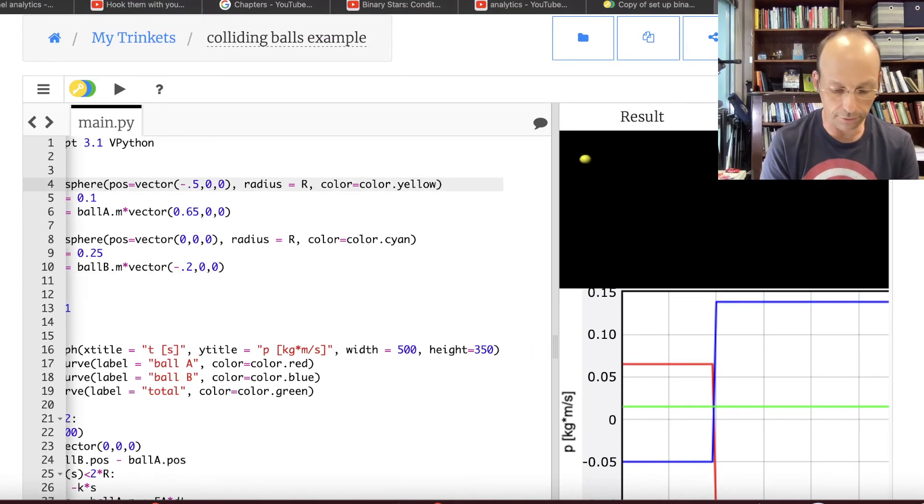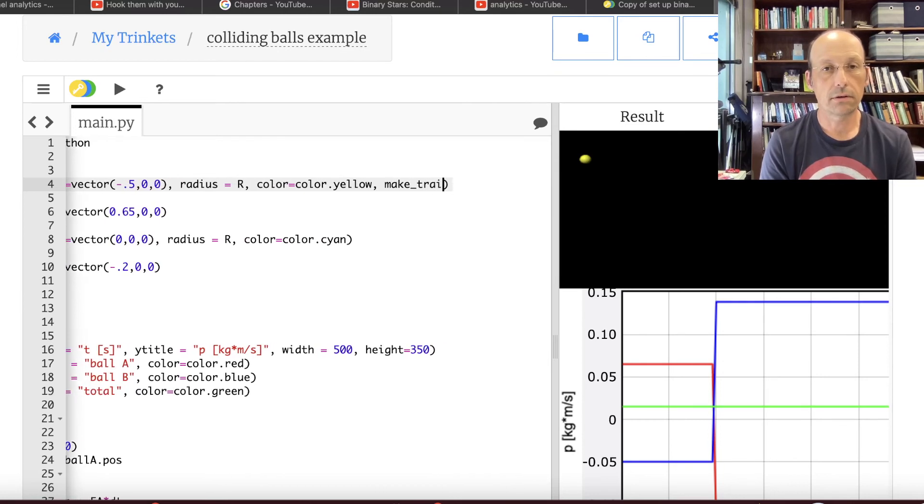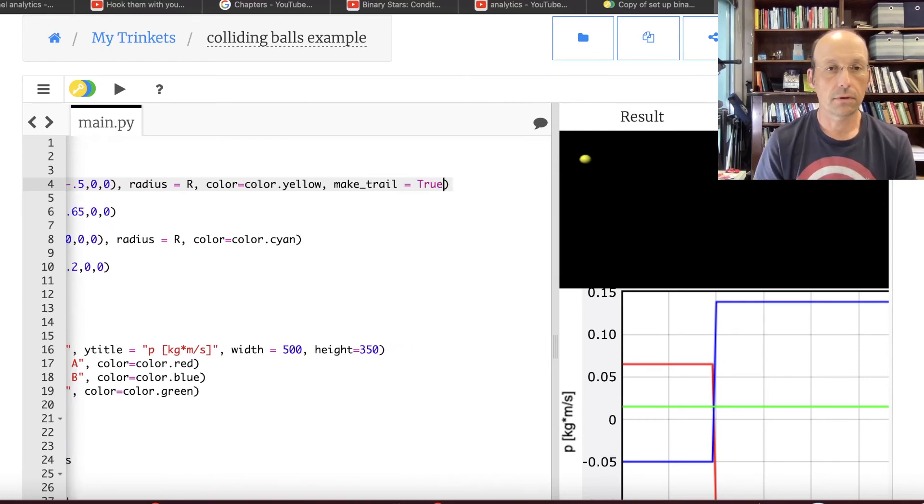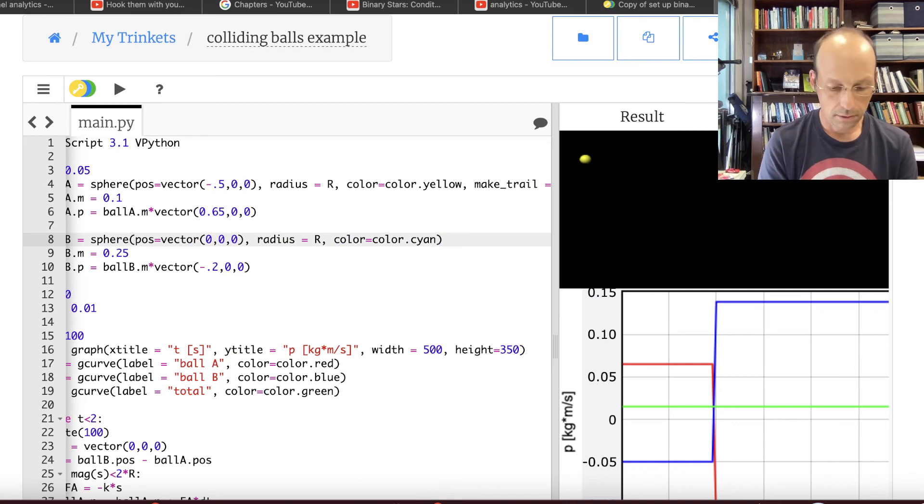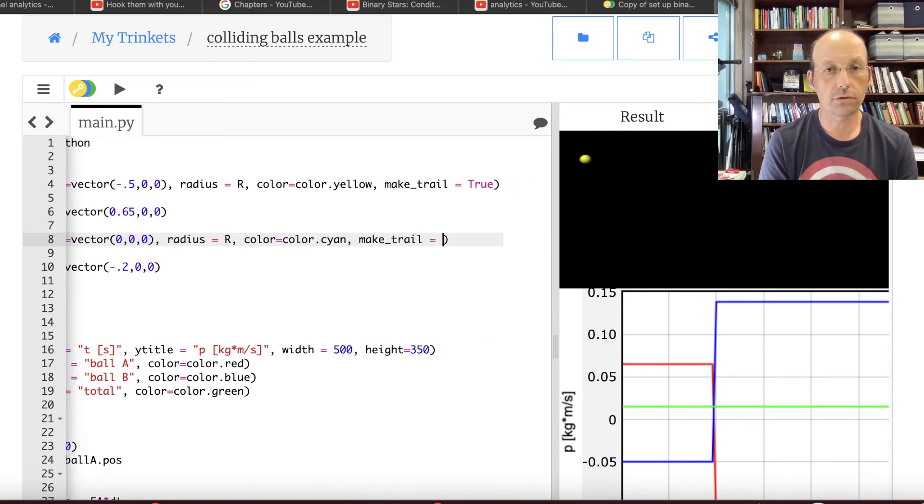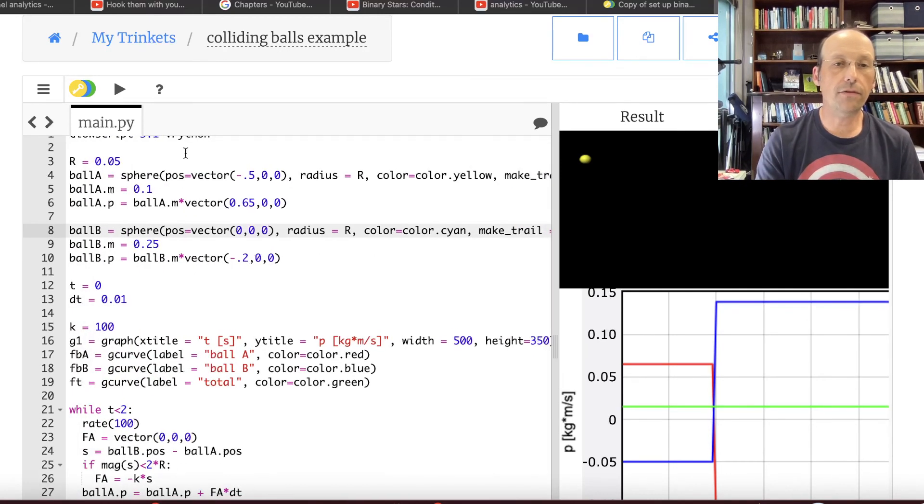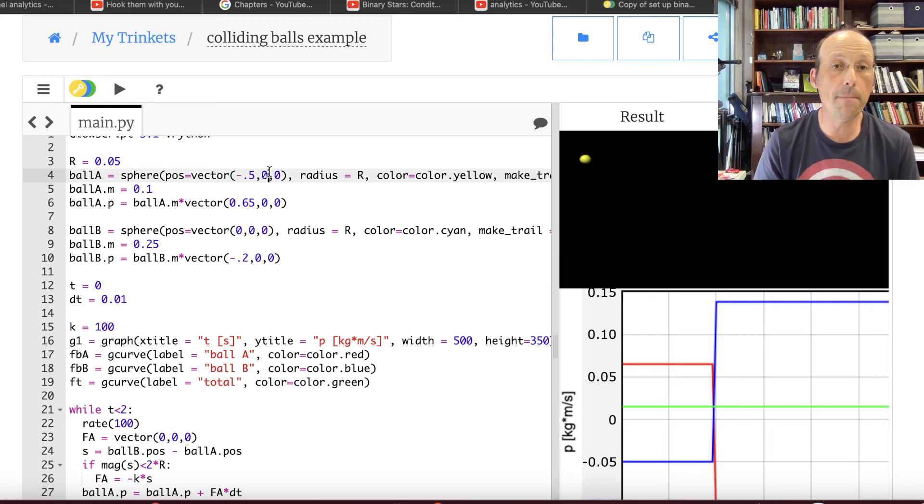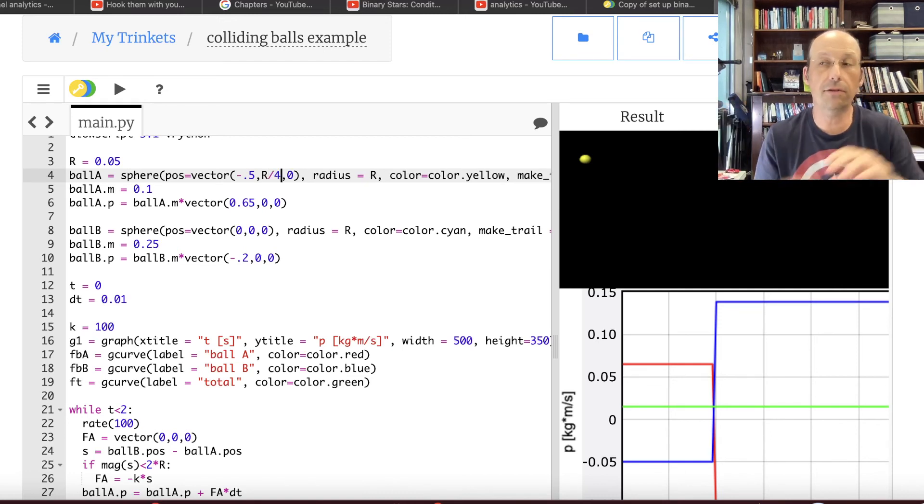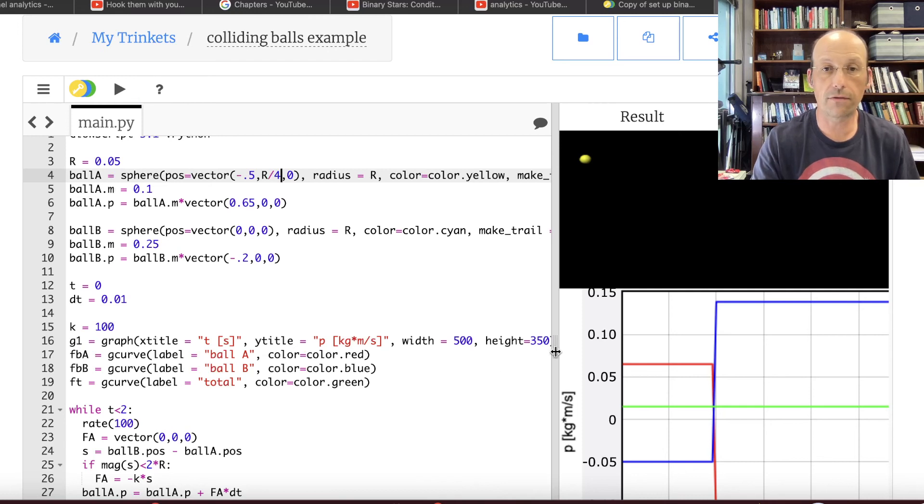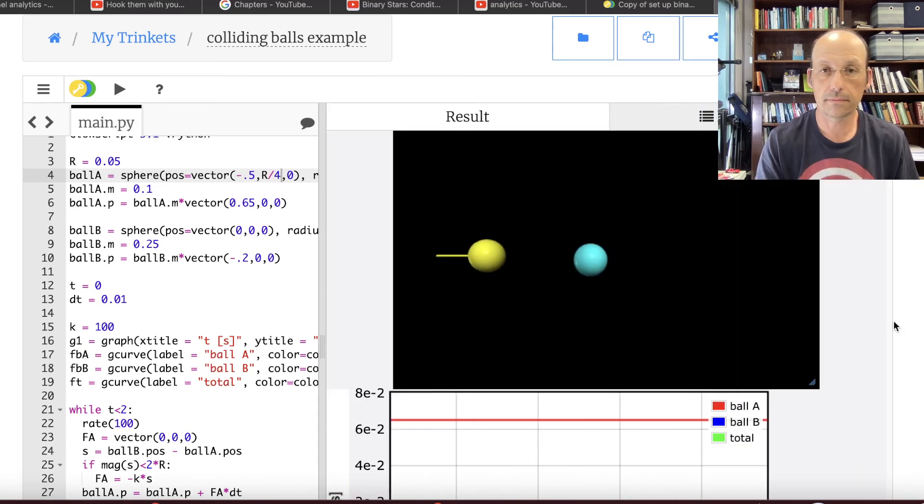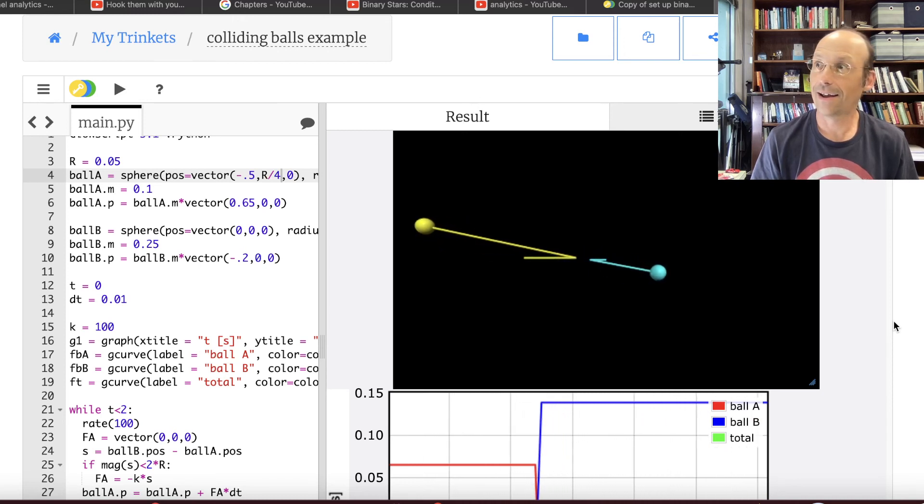So first I'm going to do is make trail. I'm going to turn on trails. So make trail equals true. And then down here, make trail equals true. Okay, now this one starts off on the X axis. But I'm going to move it up a little bit. Let's say it's shifted up R over 4. I just picked a value. So now it's not on the Y axis. So now when they collide, they're going to be off center. What's going to happen in that case? Let's just run it and find out. That's how we do things.